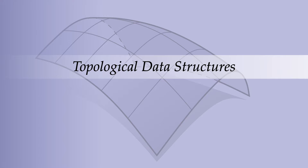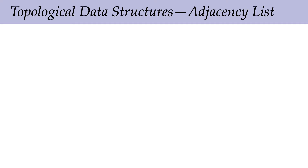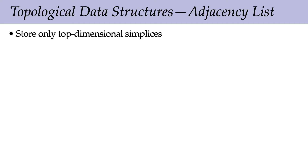Because we have this nice regular structure, we can design very nice data structures for encoding our meshes. A data structure that captures the connectivity of a mesh is called a topological data structure — it doesn't capture geometry, it doesn't tell you where things are in space, just how things are connected up.